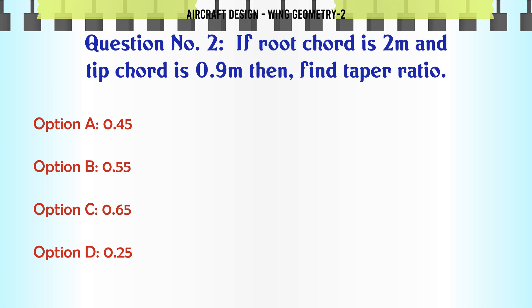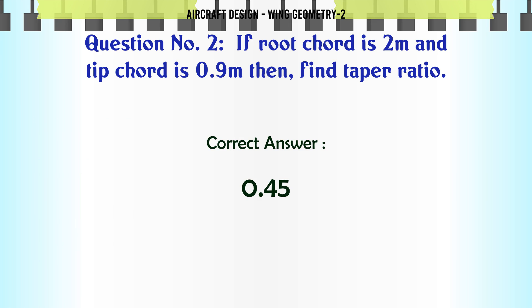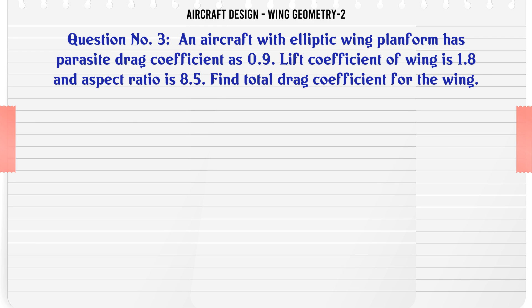A: 0.45, B: 0.55, C: 0.65, D: 0.25. The correct answer is 0.45. An aircraft with elliptic wing platform has parasite drag coefficient as 0.9.